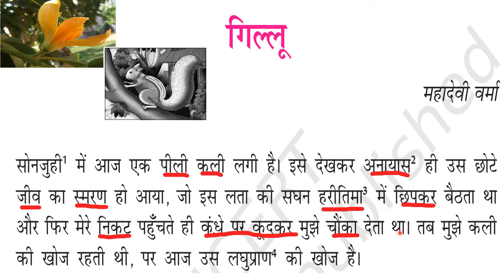When the authoress Mahadevi Verma saw this yellow bud, suddenly she remembered that tiny creature which used to hide in the dense greenery of that plant. As soon as the authoress reached near him, he would jump onto her shoulder and surprise her. Anayas means suddenly; Chota jiva means tiny creature; Smaran ho aya means she remembered; Lata ki saghan haritima means the dense greenery of the plant's twines; Chipkar betta tha means who used to hide behind it; Kandhe par kood kar means by jumping on the shoulders; Chonka deta tha means used to surprise her.